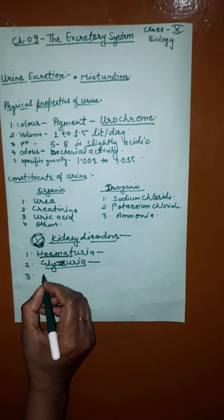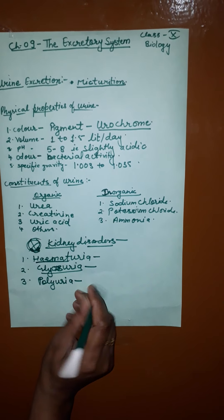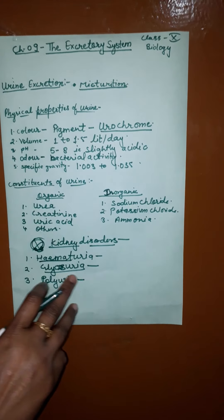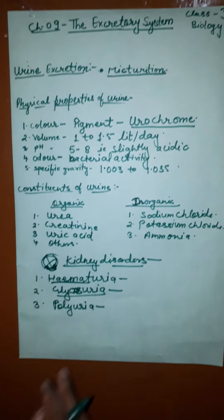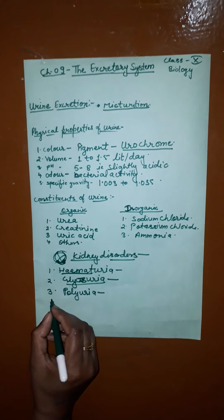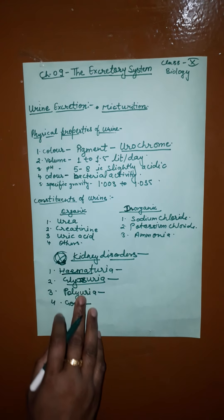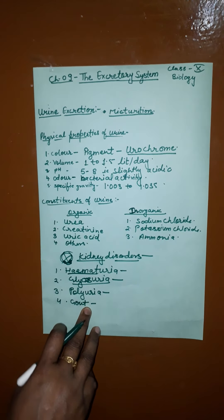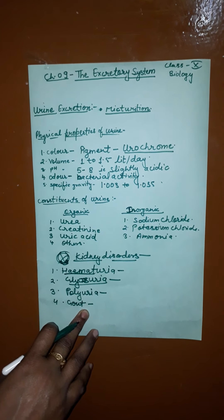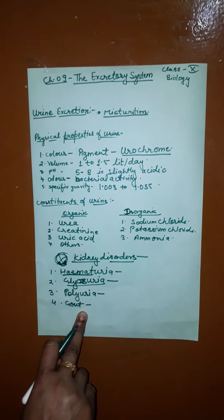The third disorder is polyuria — due to lack of antidiuretic hormone, urine production is increased. Polyuria means increased urine formation. The fourth is gout, where uric acid crystallizes and gets deposited in joints, resulting in swelling, stiffness, and pain in the joint.